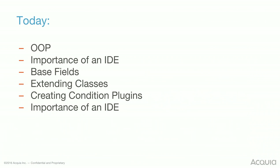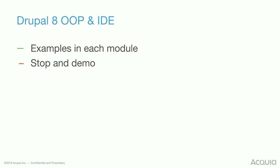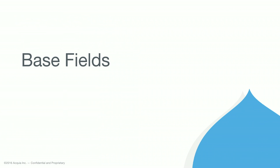We're going to look at object-oriented programming a little bit. Most examples either are object-oriented or benefit from it. We'll look at the importance of an IDE, base fields in Drupal 8, extending classes, and creating condition plugins. Drupal 8 is more complicated but things are more encapsulated. I think it's more self-documenting in a lot of ways - easier to learn, but most of that depends on having a good IDE. You need an IDE that knows PHP classes so you can see the parent class, go directly to the interface, and easily see what's overridable in a particular method.